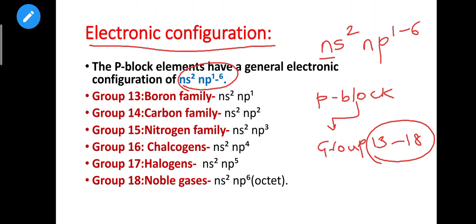Group 13 is called the Boron family. Group 14 is the Carbon family. Group 15 is the Nitrogen family. Group 16 are called Chalcogens — the first element is oxygen, so chalcogens are also called ore-forming elements. Group 17 is Halogens, and Group 18 is Noble Gases.